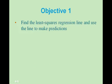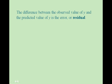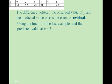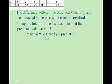For objective 1, we want to find the least squares regression line and use the line to make predictions. The difference between the observed value of y and the predicted value of y is the error or the residual. Using the line from the last example, the residual equals the observed y minus the predicted y, which is 5.2 minus 4.75, giving us a residual of 0.45.